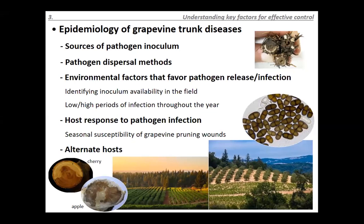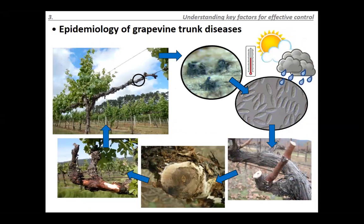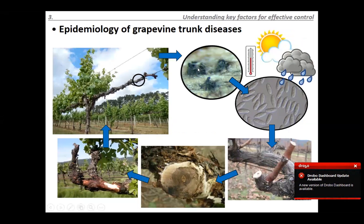The epidemiological life cycle of a grapevine trunk disease works as follows: infected, symptomatic areas of the plant contain fruiting bodies with spores inside. These spores are released into the environment depending on environmental factors like temperature, relative humidity, and rainfall. The spores then infect pruning wounds, the fungus progresses inside the vascular system, and the life cycle continues.